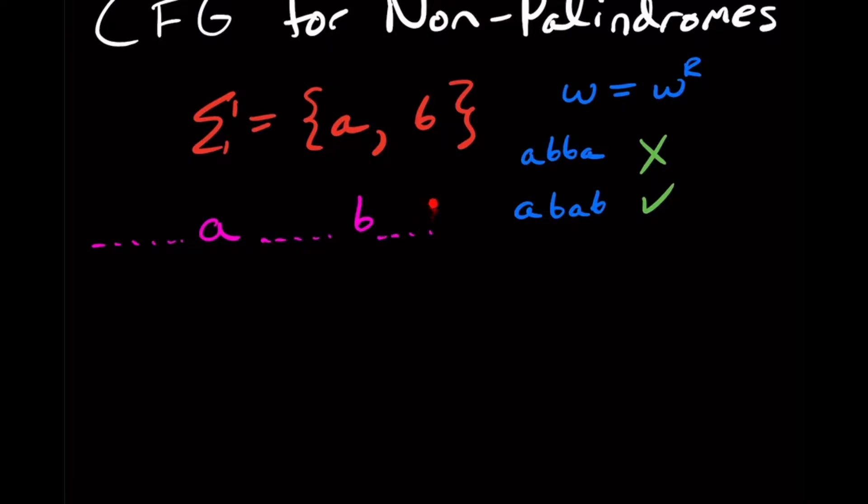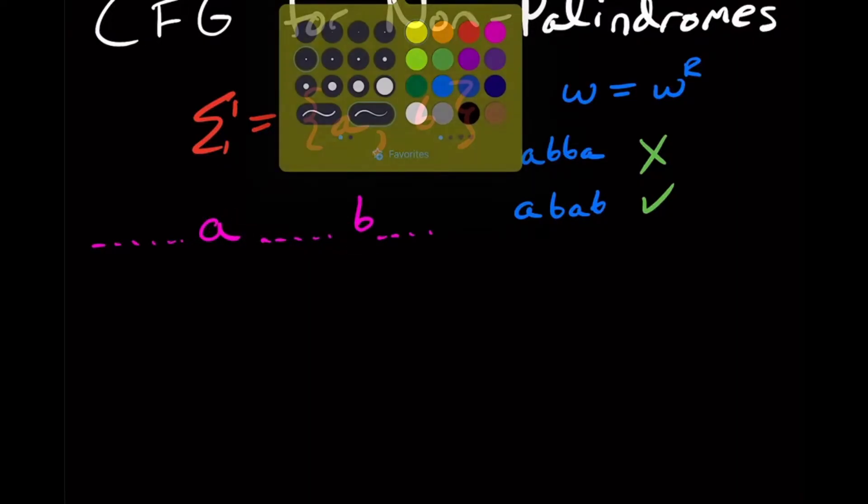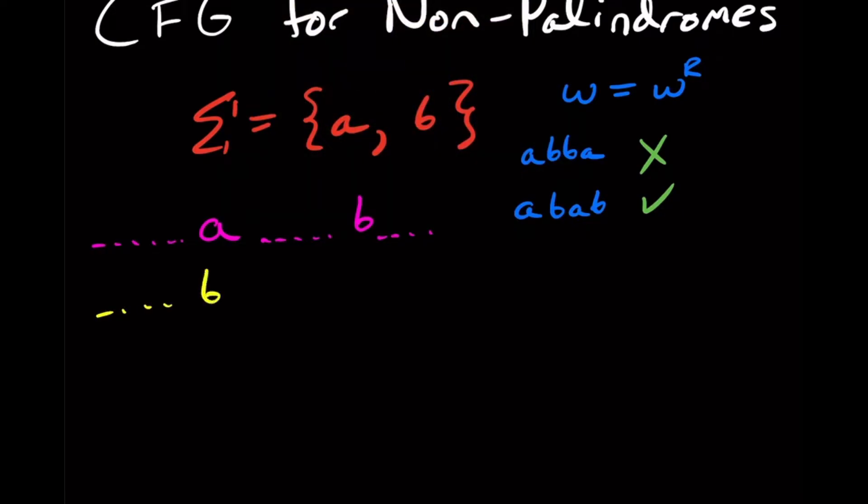And everything that's on the outside here could be anything at all, essentially. So it could be anything over here, anything in here, anything in here. This A must match with this B somewhere. But it could be that this A appears after this B. It doesn't have to be before the B like I'm drawing here. It very well could be that it's the other way around.